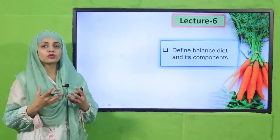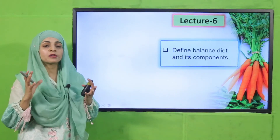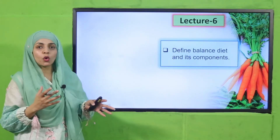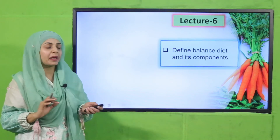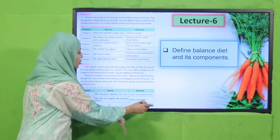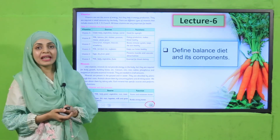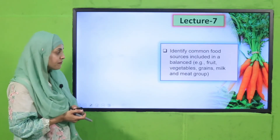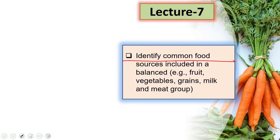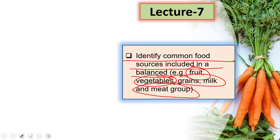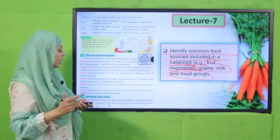In Lecture Number 7, students will be able to identify common food sources included in a balanced diet — like fruits, vegetables, grains, milk, meat, and the meat group. Students will be able to identify the different food groups that make up your balanced daily diet. The page under reading is page number 46.